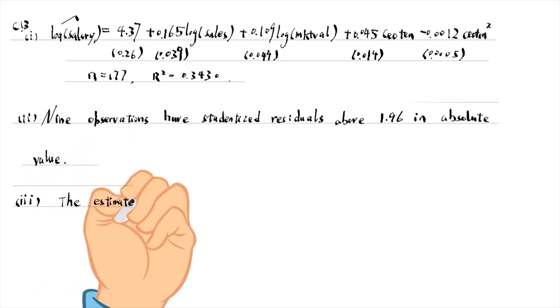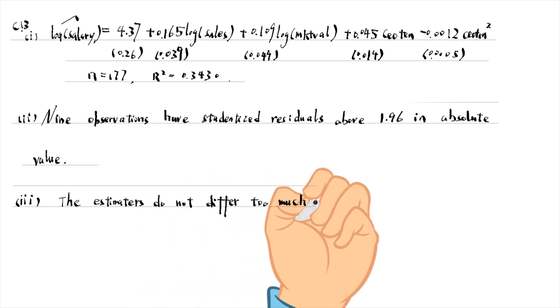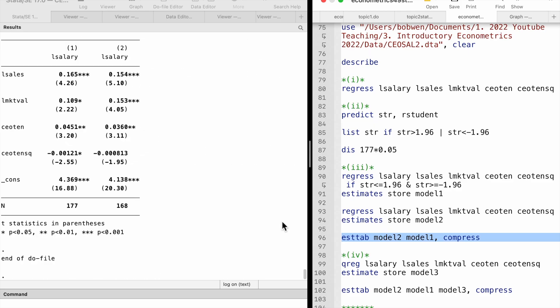For part 3, the estimates do not differ too much between the two models. A noticeable coefficient change is for the firm's log market value. It increases from 0.11 to 0.15.